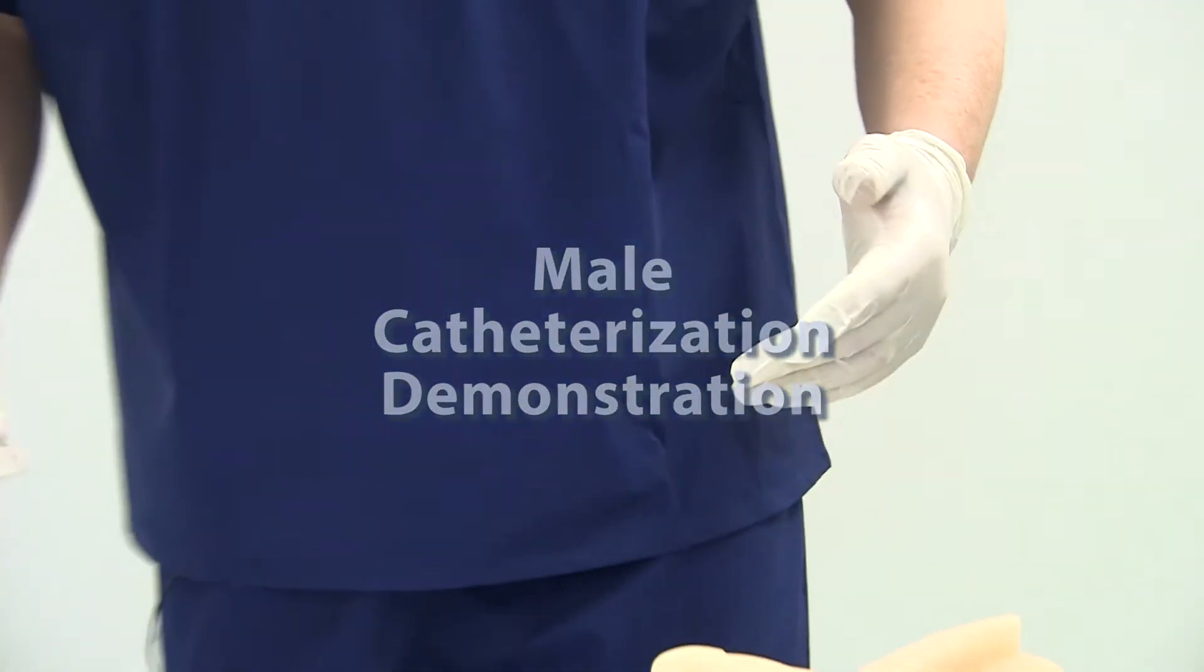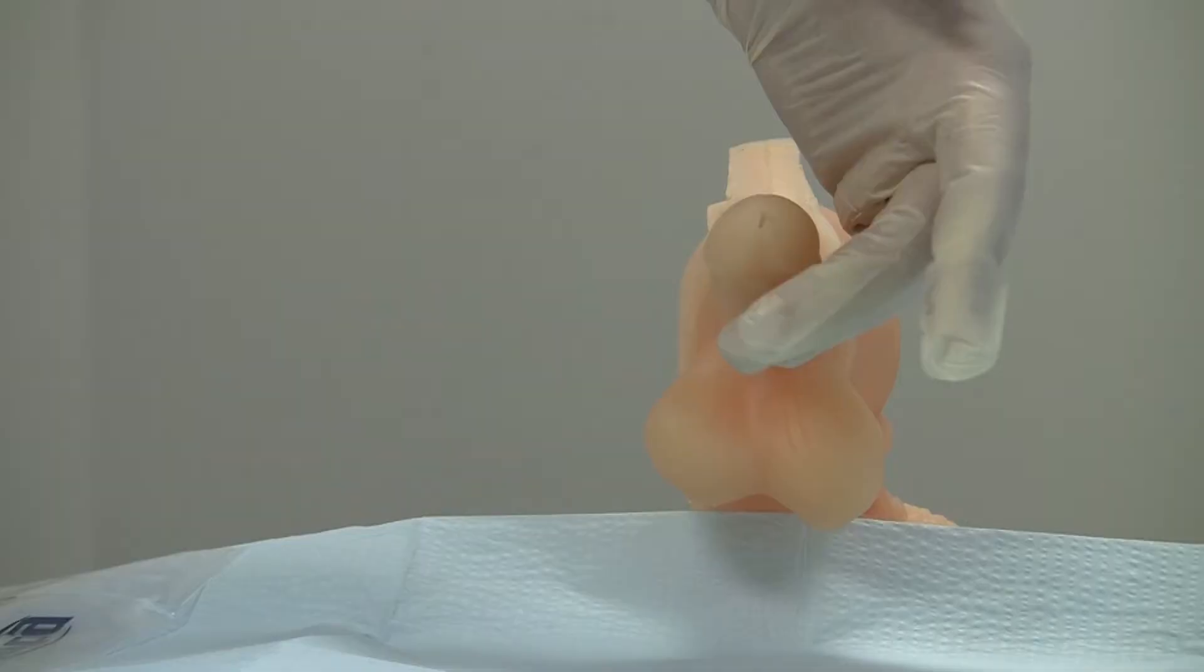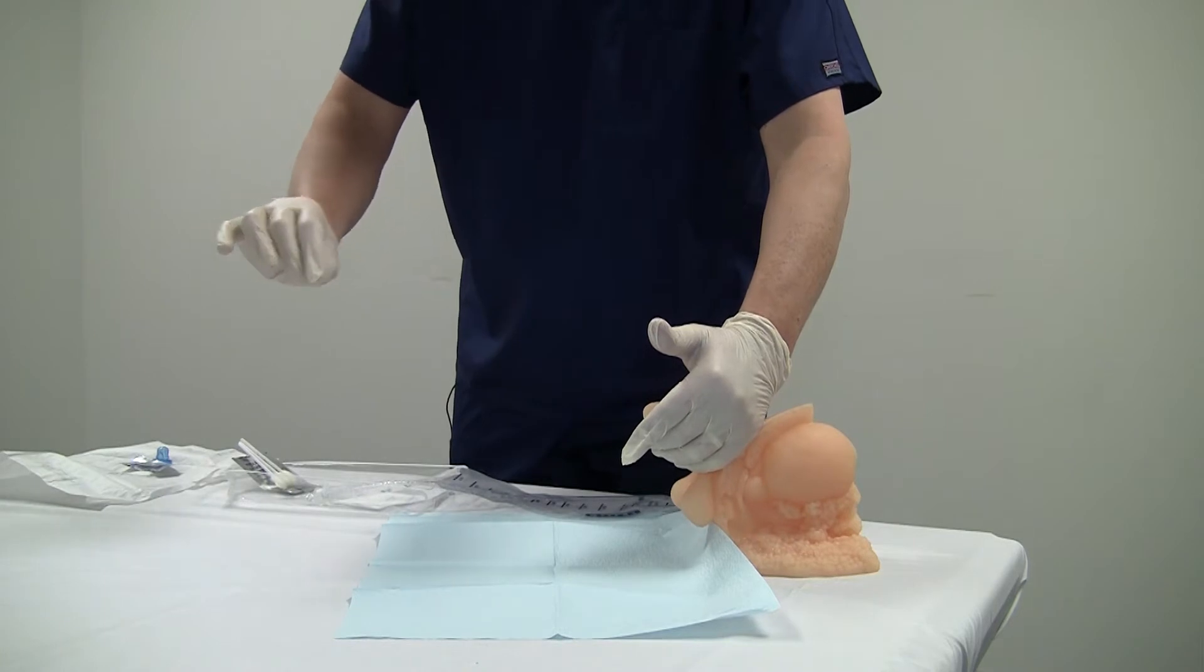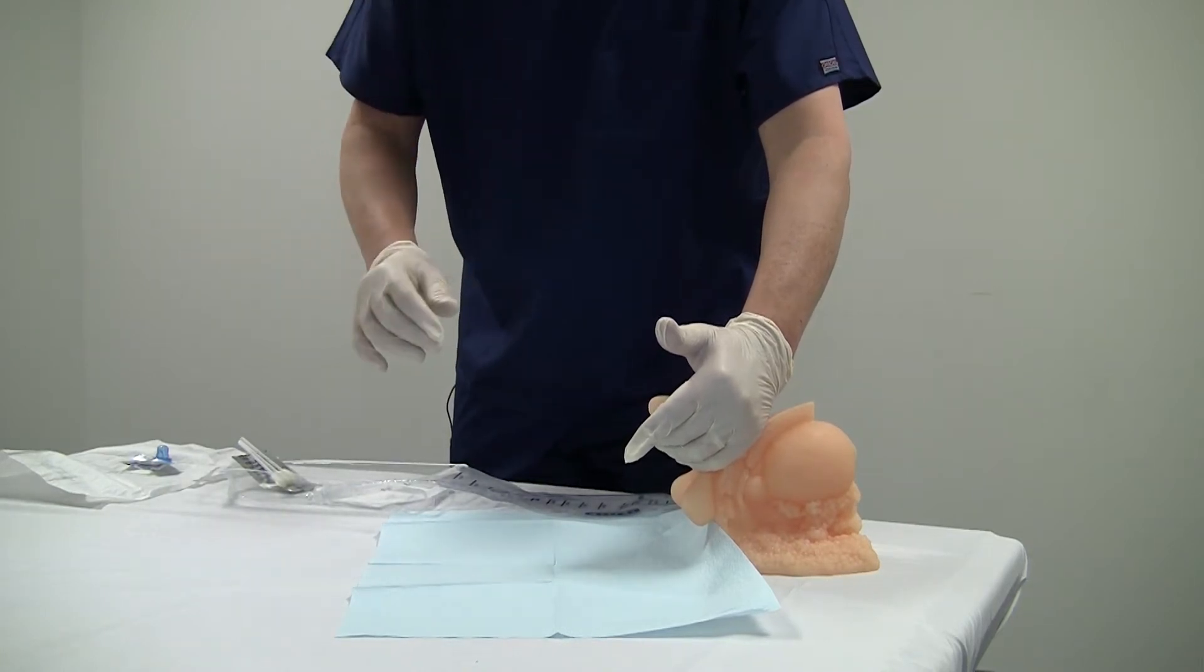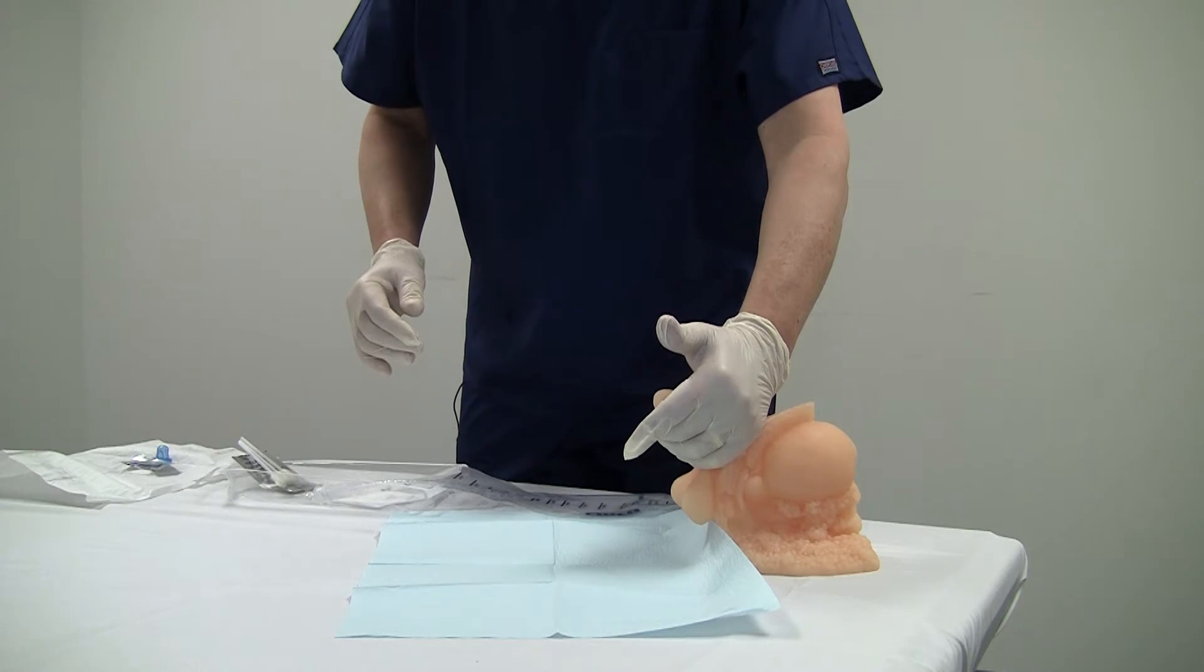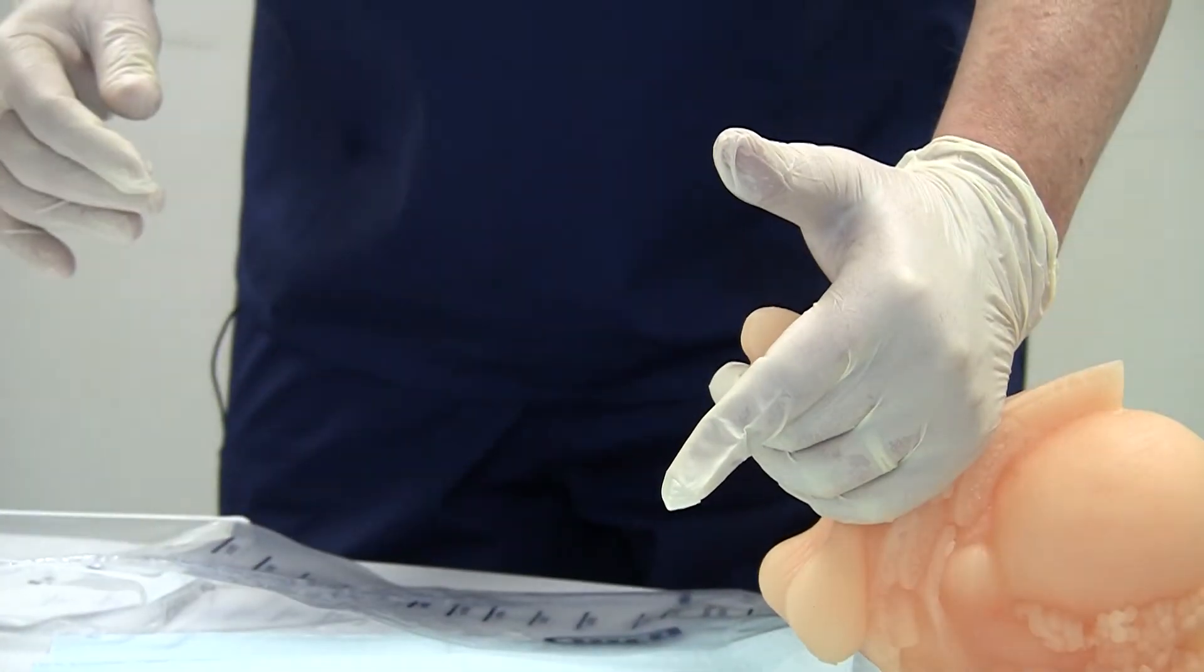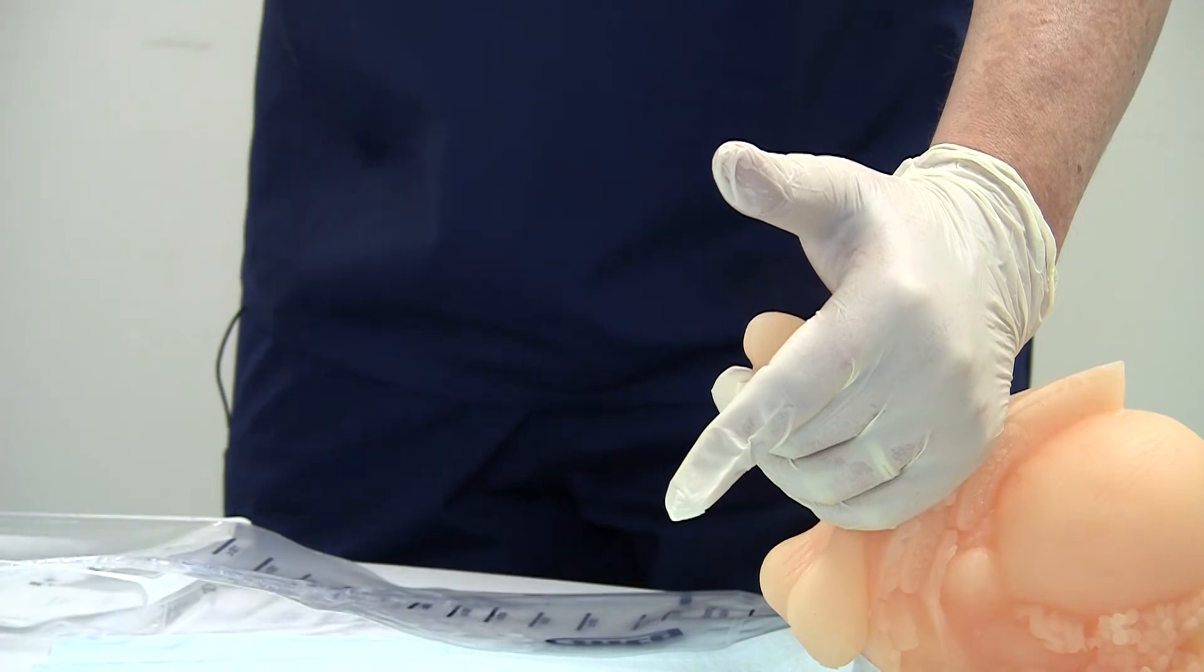The first thing I'm going to do is pull any foreskin back with my last three fingers of my left hand. I'm right-handed and all the advancement of the catheter will be done with my right hand. I'm going to use the left hand to stabilize the penis. Notice here that I'm freeing up my thumb and my index finger and I'll explain what they're going to be used for in just a second.